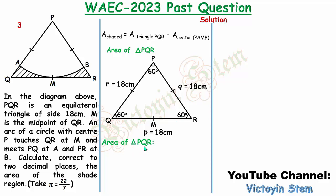Now I need to find the area of triangle PQR. If I can get that and find the area of sector PAMB, the difference will give me the area of the shaded portion. To find the area of PQR, I have three alternatives because all sides and all interior angles (60 degrees each) are known.